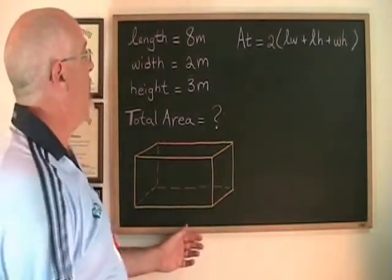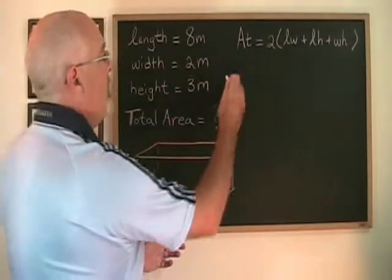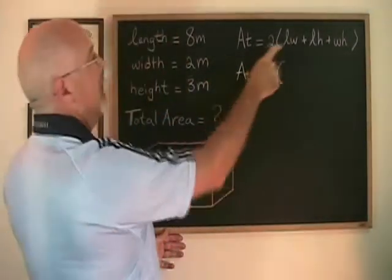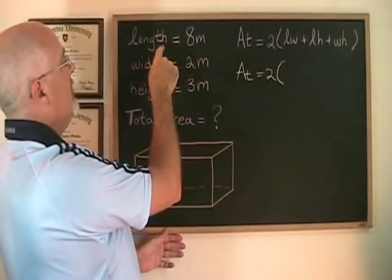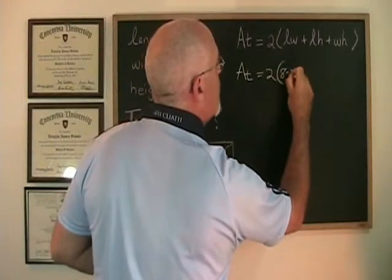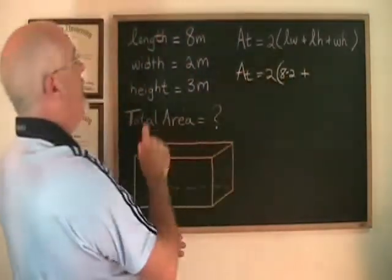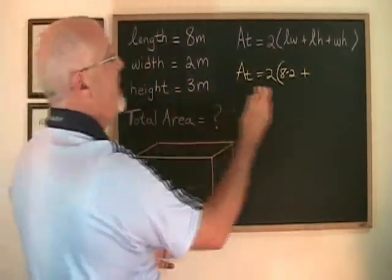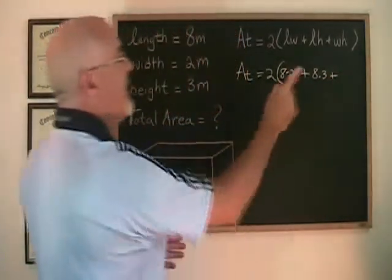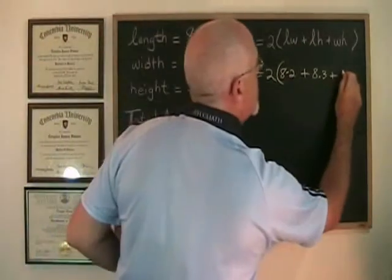If I start plugging in these values, I get area total is equal to 2 times L times W. Length times width which is 8 times 2, plus LH is length times height which is 8 times 3, plus WH is width times height which is 2 times 3.